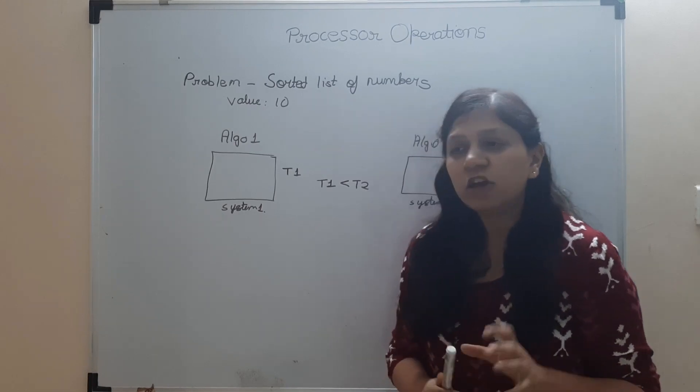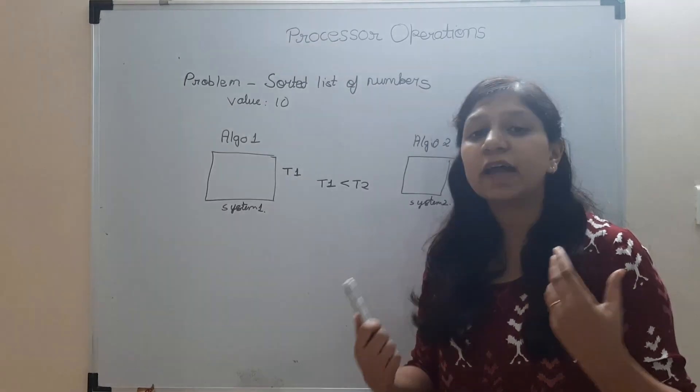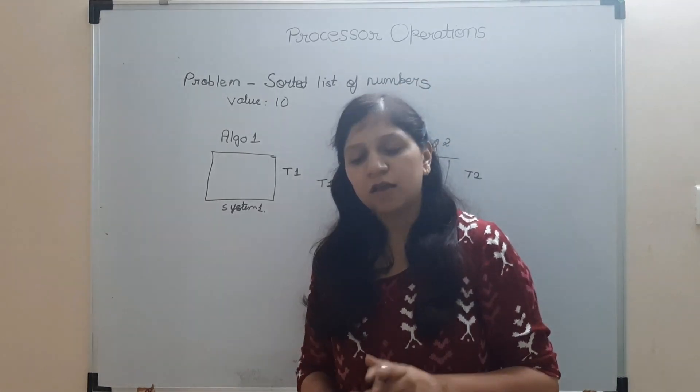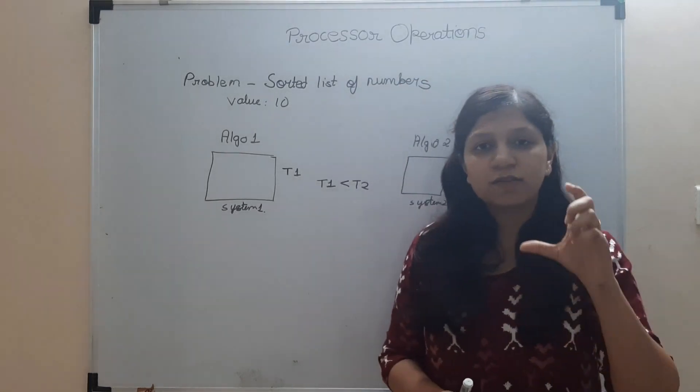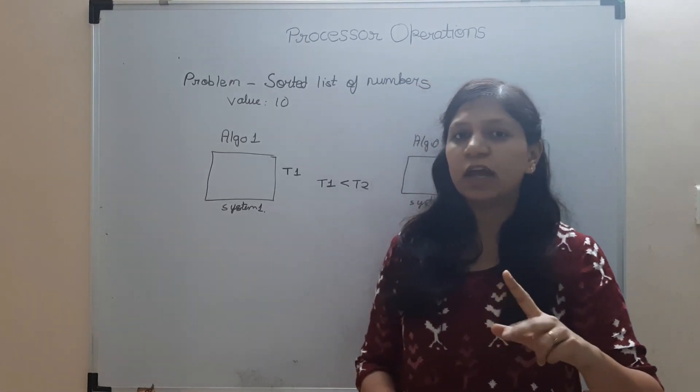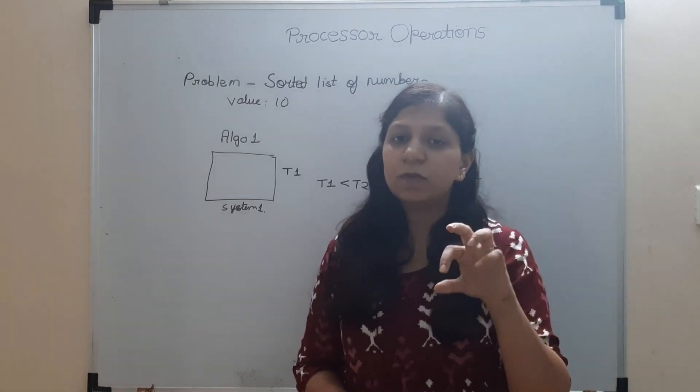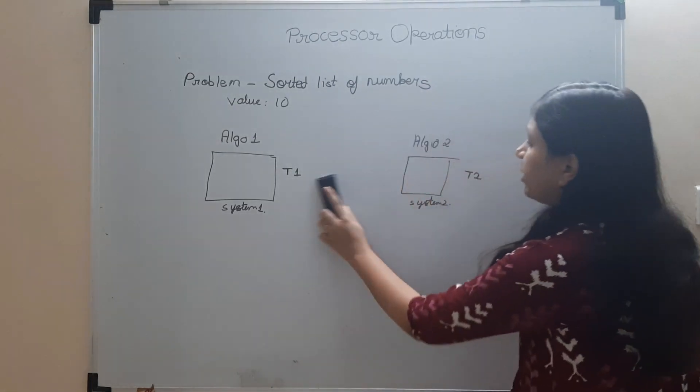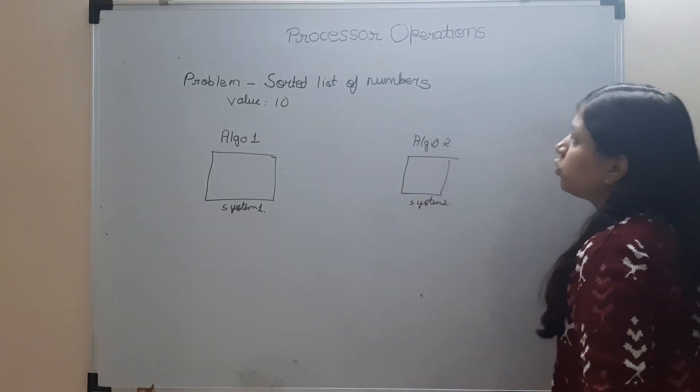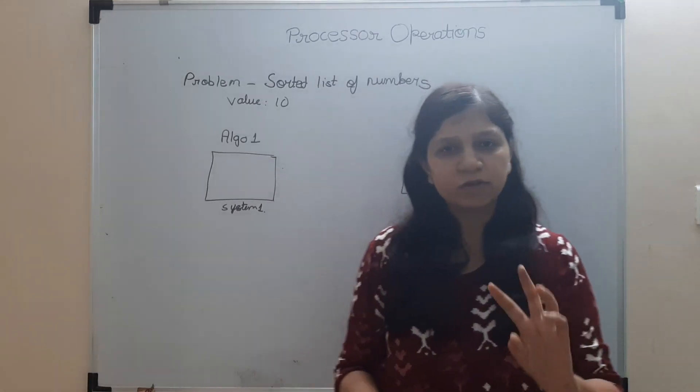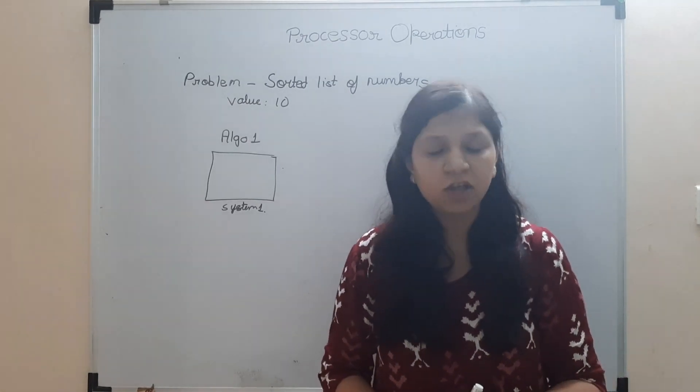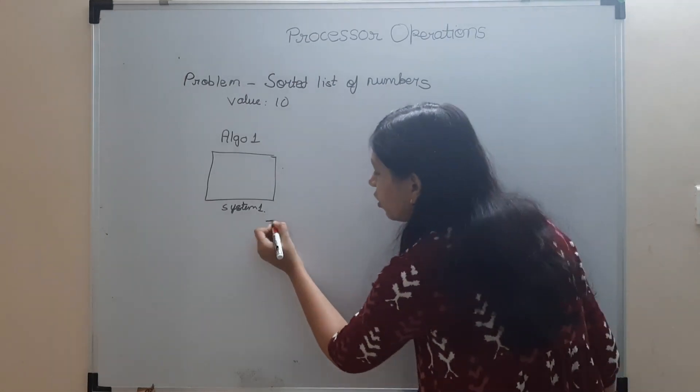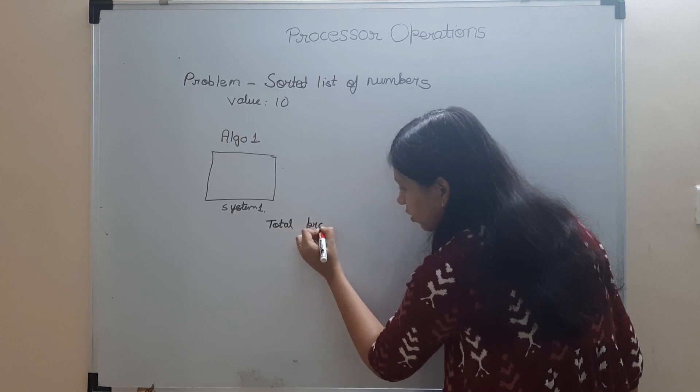So you cannot compare two algorithms on the basis of running time because each system is different, its configurations are different. We cannot compare on the basis of running time. Now if we cannot compare it on the basis of running time, what would be the other parameters on which we can compare? What would be the other approaches to compare algorithms? Next thing that comes is: we will see the processor operations for both the algos, and whichever has less processor operations, it means that algo is going to run faster.